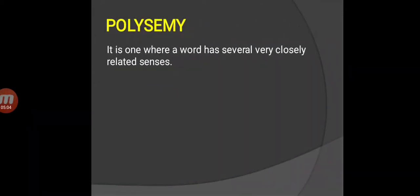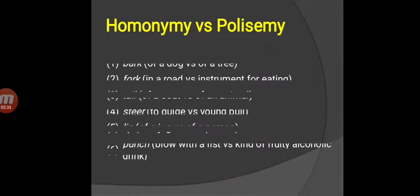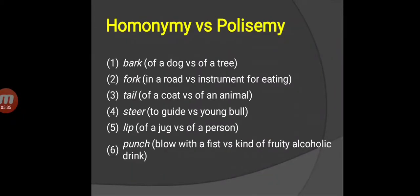Next is polysemy. A case of polysemy is one where a word has several very closely related senses. In other words, a native speaker of the language has clear intuitions that the different senses are related to each other in some way. For example, the word earth - earth in one sense is our planet, but earth in the other sense can be referring to soil. For practice, let's decide whether the following words are examples of homonymy or polysemy.